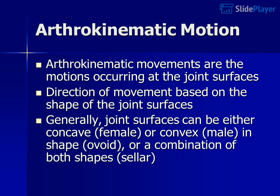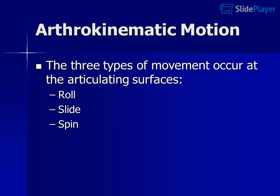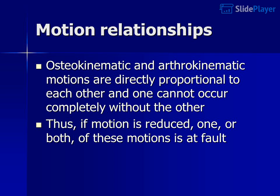Arthrokinematic movements are the motions occurring at the joint surfaces. Generally, joint surfaces can be either concave (female) or convex (male) in shape — ovoid — or a combination of both shapes, sellar. The three types of movement that occur at the articulating surfaces are roll, slide, and spin. Osteokinematic and arthrokinematic motions are directly proportional to each other and one cannot occur completely without the other. Thus, if motion is reduced, one or both of these motions is at fault.